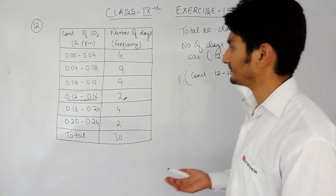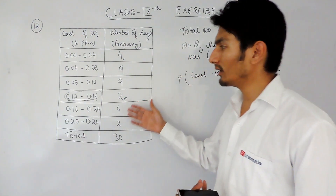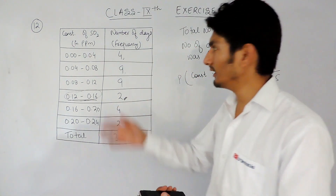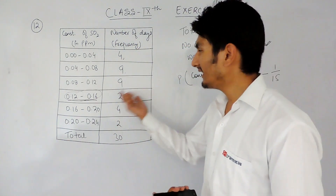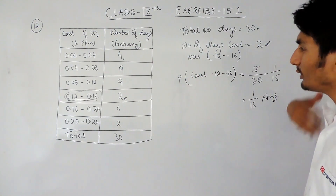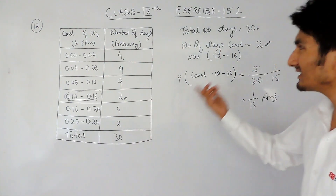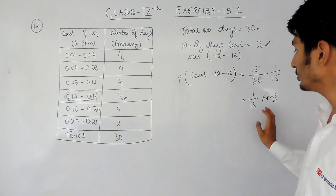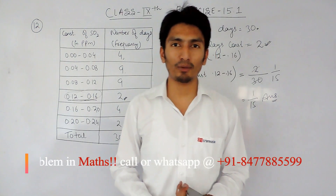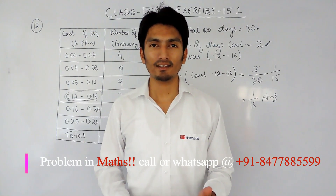So this is the answer. The concept is simple: whenever you want to find the probability of some event, find the number of times that event occurred in the complete data — that is the number of trials in which the event occurred — and divide by the total number of trials, which here is 30. I hope you are clear on this question. If you have any problem, you can contact us. Thank you and good luck.